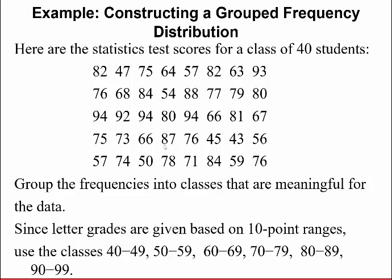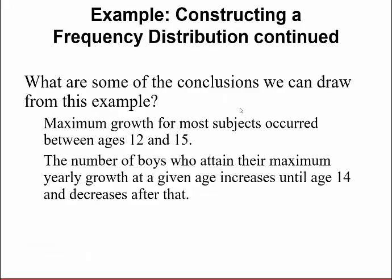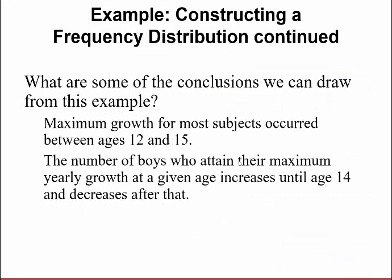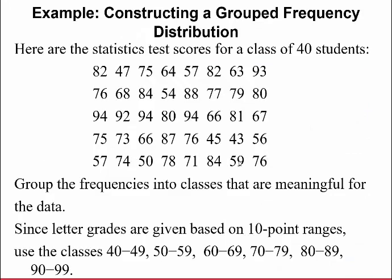Since letter grades are given based on 10 point ranges, what I want to do is I want to set up my classes, the groups that you're going to put the data into. So I'm going to put the classes into 10 point ranges. So one grouping of values are going to be the numbers 40 to 49. This is actually 10 values because there's 40, 41, 42, 43, 44, 45, 46, 47, 48, 49. It's 10 values.